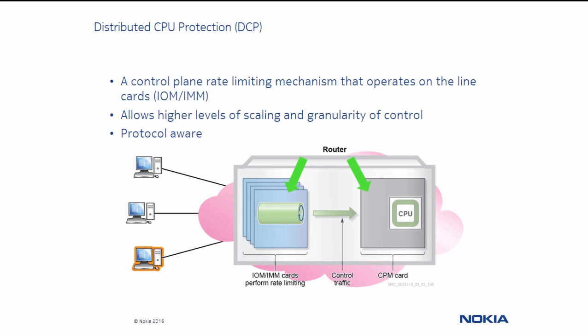CPM delegates some tasks to the line cards. In distributed CPU protection, there are two types of policers: one is termed the enforcer-policer, and the other is called the local monitor. Distributed CPU protection provides protocol granularity per SAP and network interface, whereas CPU protection is not protocol aware.